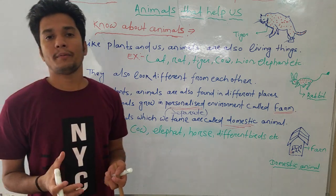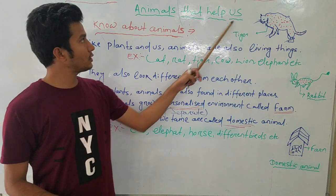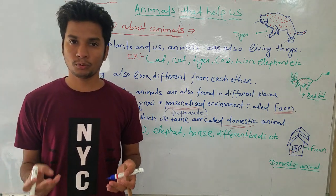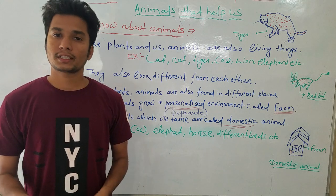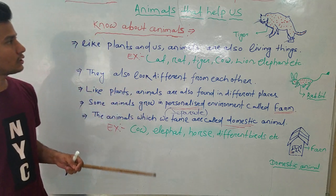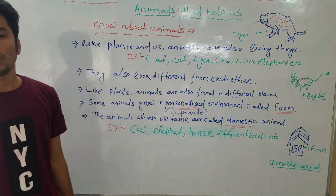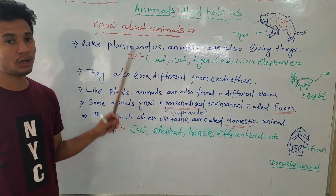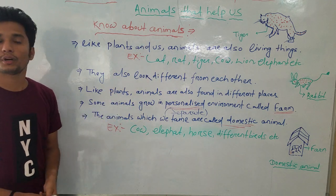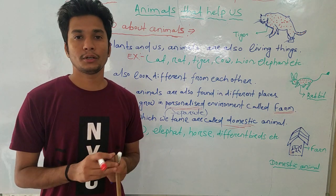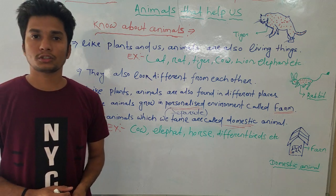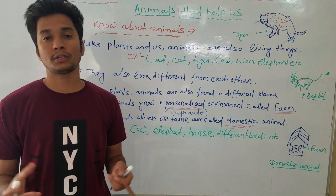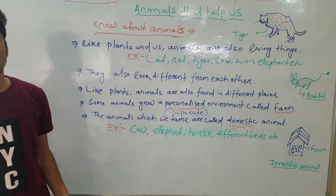So this is all about getting to know about animals. Our main topic is animals that help us — how animals help us and what foods and other products we get from animals. We will start that in the next class. I hope all of you understood properly. Watch the video two or three times and write down all the things. Thank you, students. Next class we will start how animals are helpful for us in our day-to-day life. Take care.